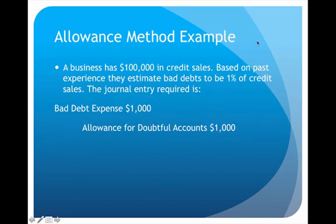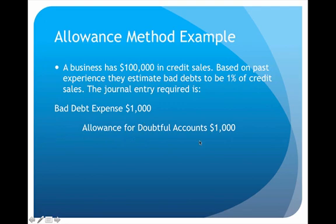For example, a business had $100,000 in credit sales. Based on past experience, they estimate about one percent of debts will be uncollectible — so the estimate is $1,000. We preemptively record this: debit bad debts expense $1,000 and credit allowance for doubtful accounts $1,000. The allowance for doubtful accounts is the account used under the allowance method to reflect estimated uncollectible debts.